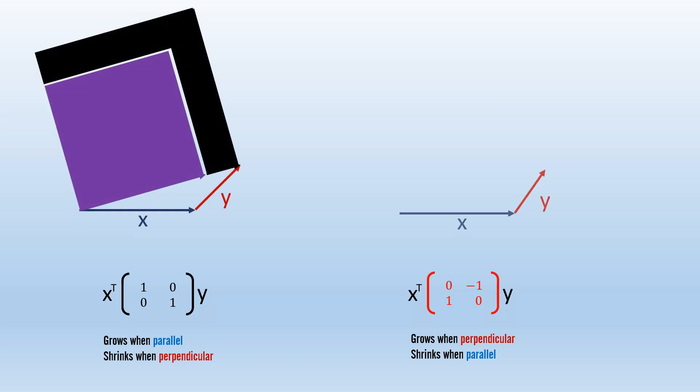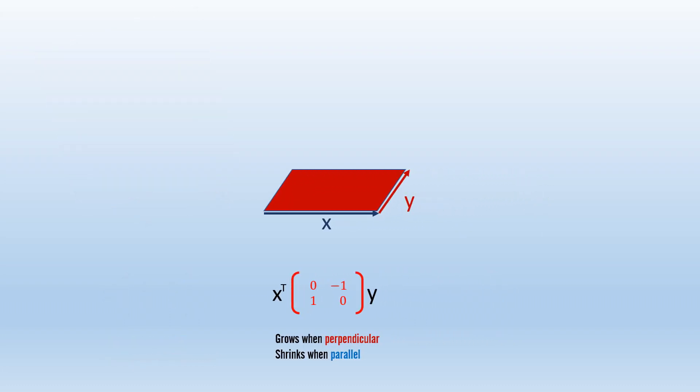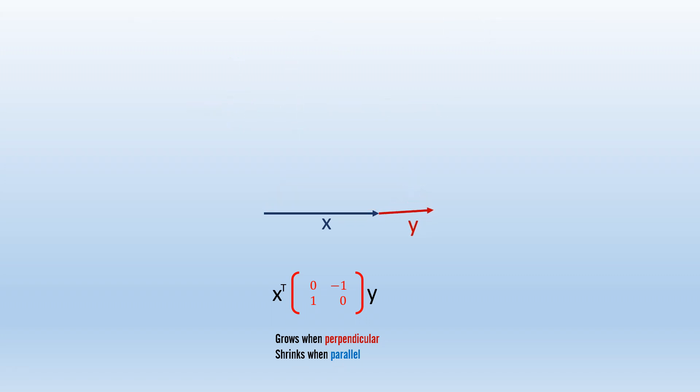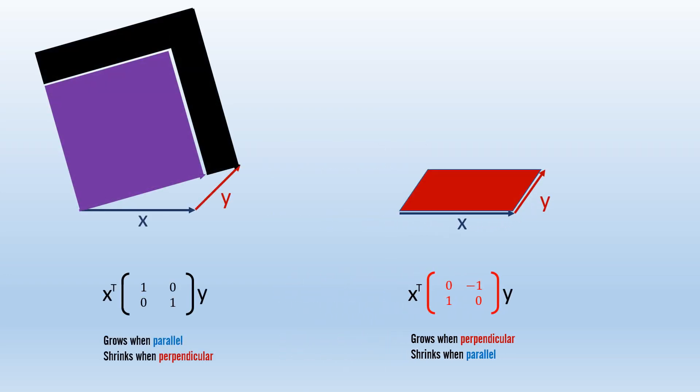In the same way the original dot product corresponds to an area, this new expression also corresponds to an area, which is the area of the parallelogram formed by the vectors. This new area is the determinant of a matrix, where the column vectors are the sides of the parallelogram. So now we know that the determinant is actually a generalized dot product. If the vectors are parallel to one another, this expression goes to 0. And now that is much easier to see. If the vectors are parallel, the parallelogram disappears, so the area is 0.